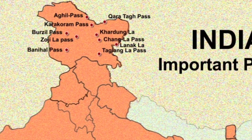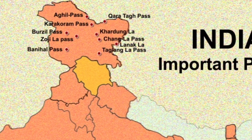Next we come to Himachal Pradesh. Here the first one is Rohtang Pass. It is a high mountain pass on the eastern Pir Panjal range. It connects the Kullu valley with the Lahaul and Spiti valleys of Himachal Pradesh.